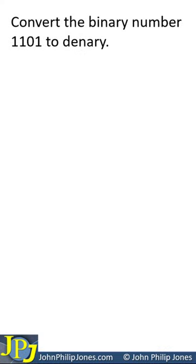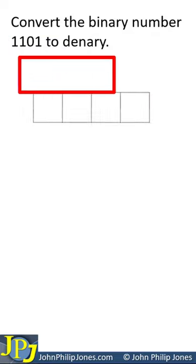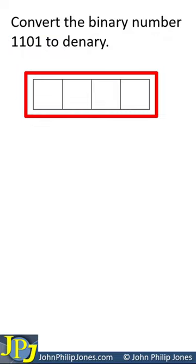Convert the binary number 1101 to denary. There are four bits in the binary number, so we need a grid capable of holding those four bits.